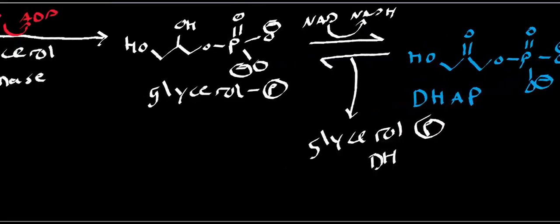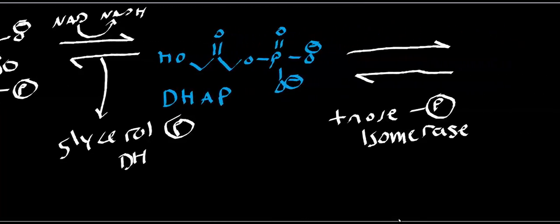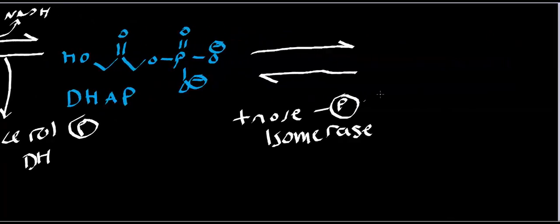In other words, if I load the body up with glycerol, you're going to form a lot of glycerol phosphate. By Le Chatelier's principle, this equilibrium is going to be pushed towards the production of glyceraldehyde 3-phosphate.